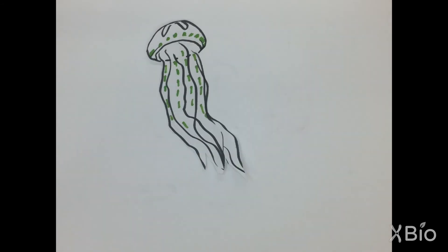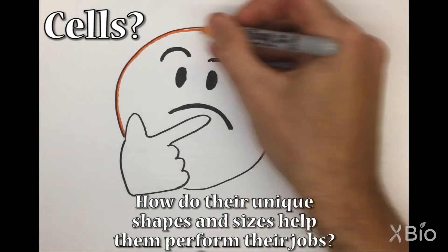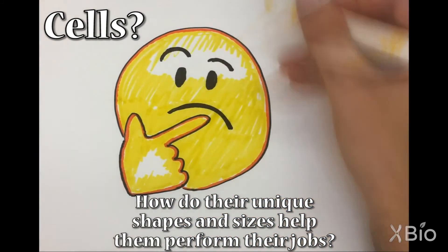What other different types of cells can you think of? How do their unique shapes and sizes help them perform their jobs?